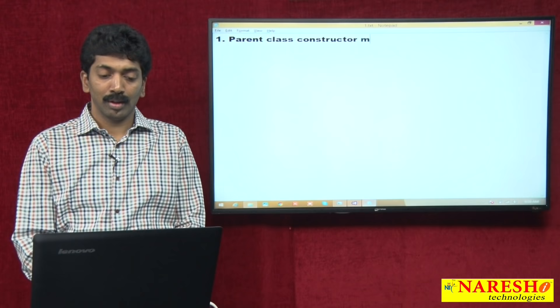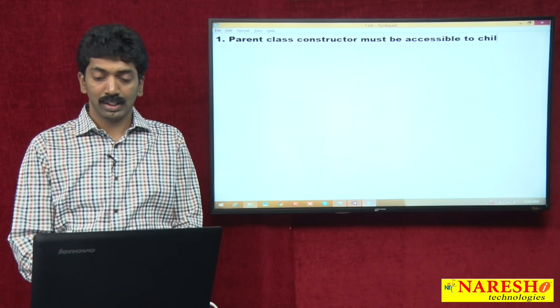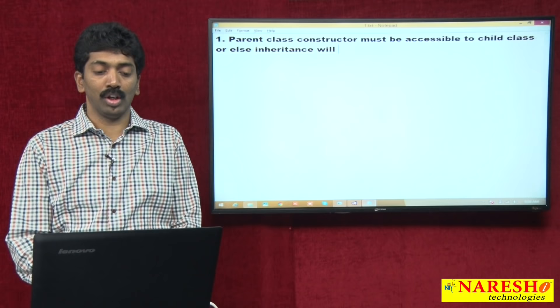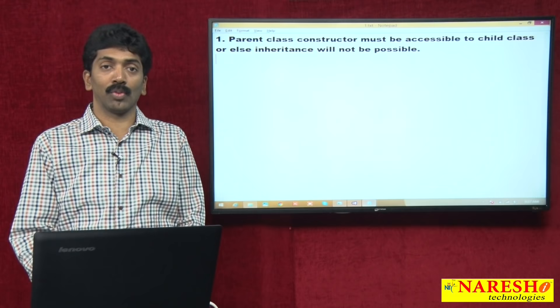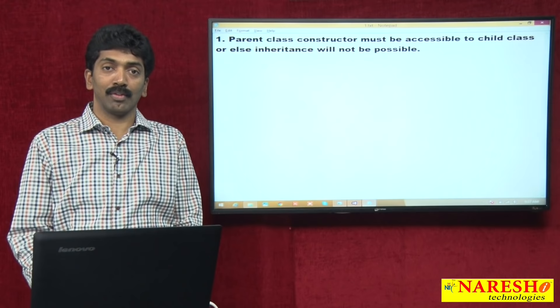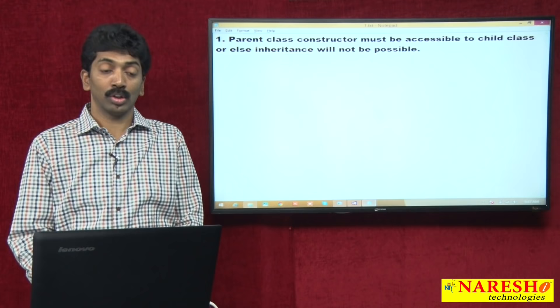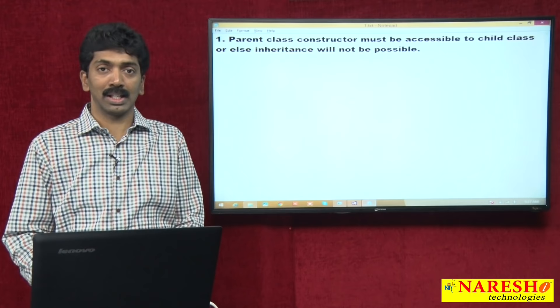The first point: parent class constructor must be accessible to the child class, or else inheritance will not be possible. This is the first important point. Whenever a child class instance is created, the child class constructor will implicitly call the parent class constructor so that parent class variables will be initialized and then consumed under the child class.